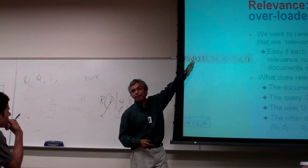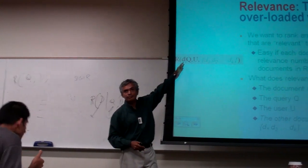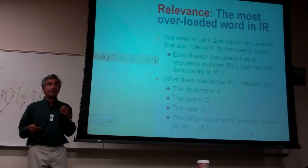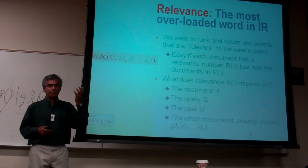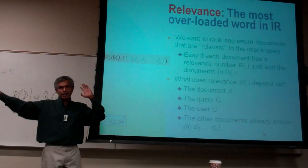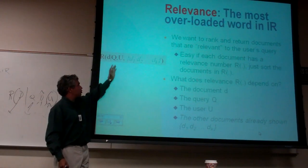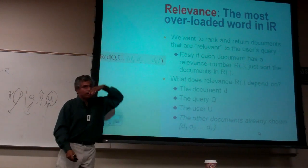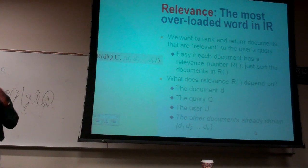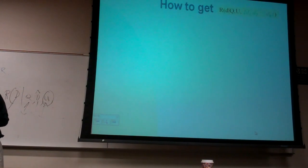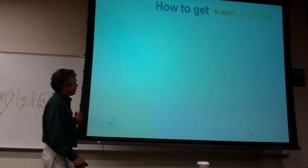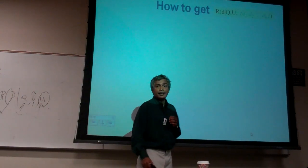So that's my form of the function. I just need to find the function. I'm already halfway there. Before, we just said R of dot given dot. Now I know R of D given Q, U, D1 to Dk. That's the k-raises that I've been doing. How do I get R of D given Q, U, D1 to Dk?